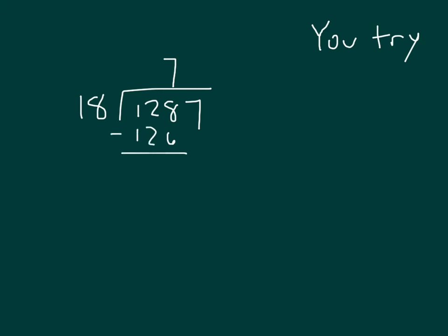Subtracting that, we get 2. 128 minus 126. I bring down the 7. And 27 ones then. So I have 27 ones divided by 18, equaling 1. Because 1 times 18 is 18. 27 minus 18 is 9.